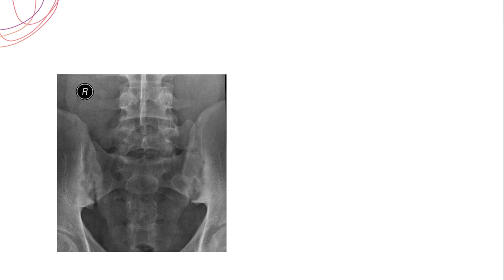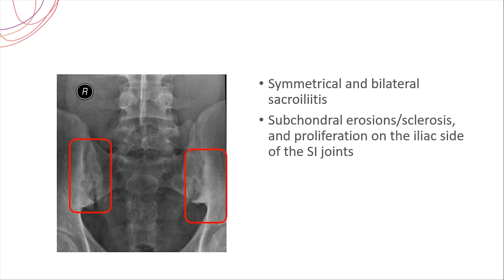The essential diagnostic feature is to demonstrate sacroiliitis. The most important joint to examine is the sacroiliac joint, and the earliest finding of ankylosing spondylitis is symmetrical and bilateral sacroiliitis, as seen in this picture. Subchondral erosion, sclerosis, and proliferation — especially on the iliac side of the sacroiliac joint — are very common. The sclerosis is highlighted here.